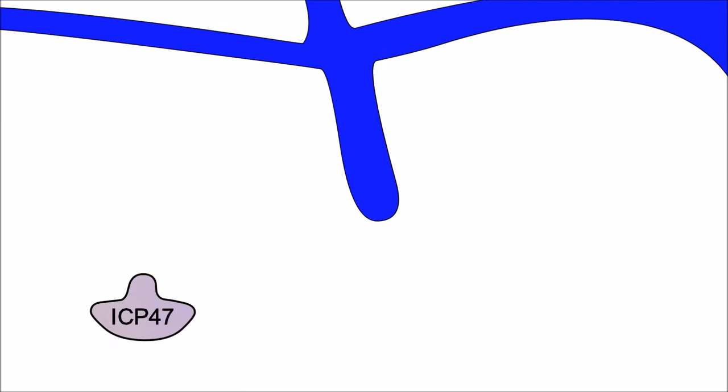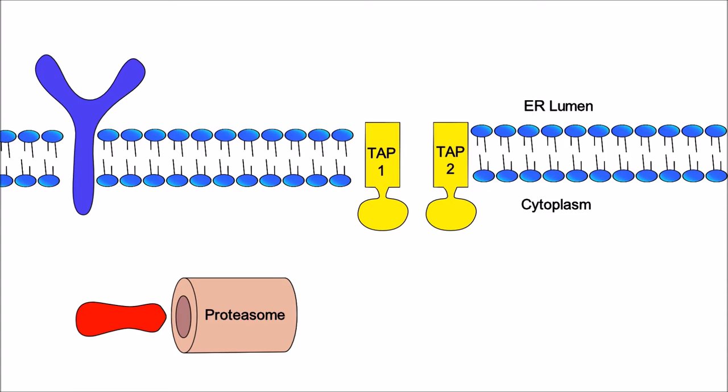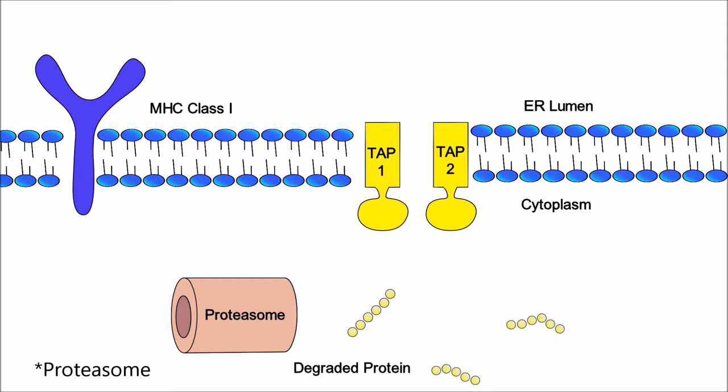This is ER lumen, the cytoplasm, TAP1, TAP2 proteins, and MHC class 1 molecule. The proteasome degrades the viral protein and the peptide moves through the TAP1, TAP2 protein into the endoplasmic reticulum lumen and binds to MHC class 1 molecule. It is then moved to the cell surface for recognition by the immune system.